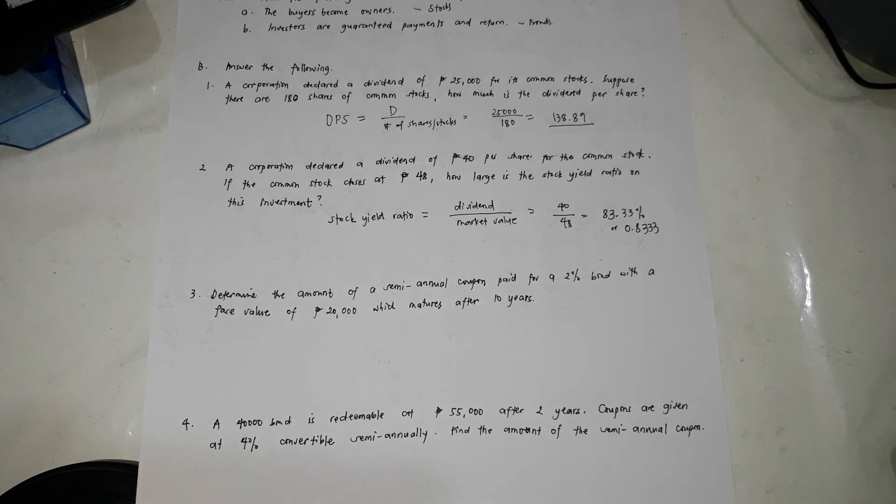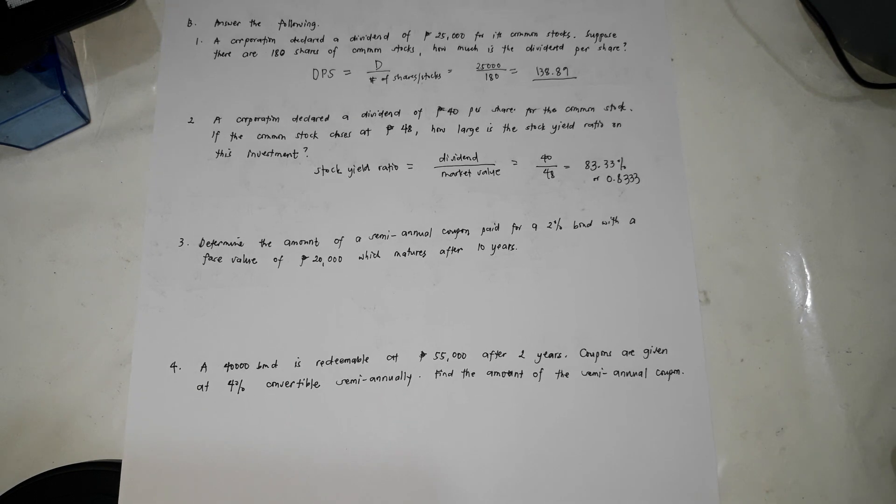So we're done with stocks. We're going to proceed with number three, which is a problem on bonds. Determine the amount of a semi-annual coupon paid for a 2% bond with a face value of 20,000, which matures after 10 years.